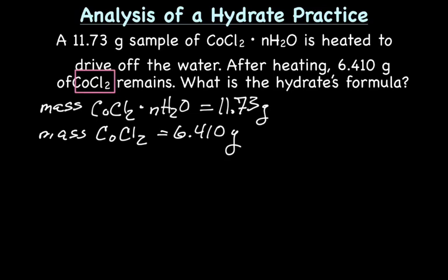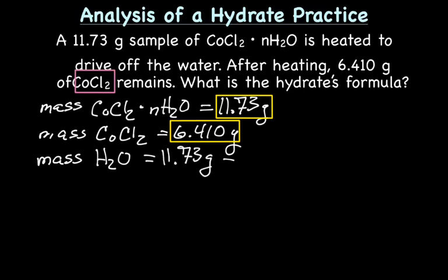And I want to know how much water. So that means I need to know the mass of the water. So the mass of our water is going to be the mass of the anhydrous subtracted from the mass of the hydrated molecule. So we'll have 11.73 grams minus 6.410 grams, giving us 5.32 grams.